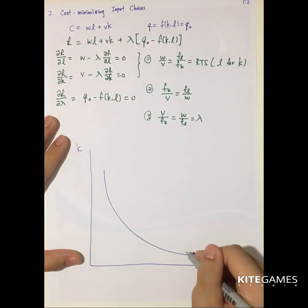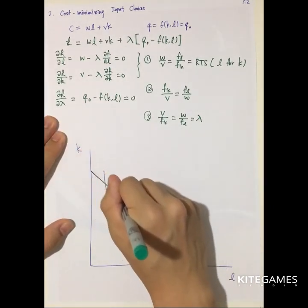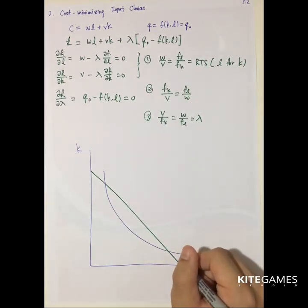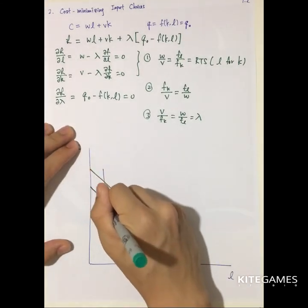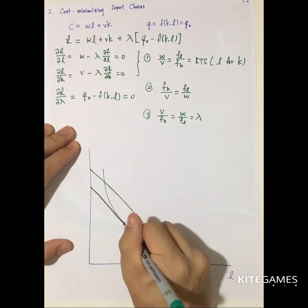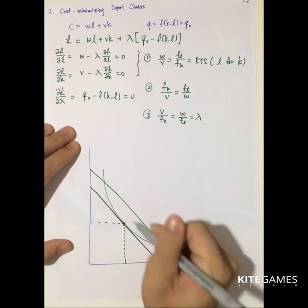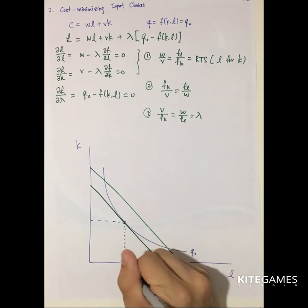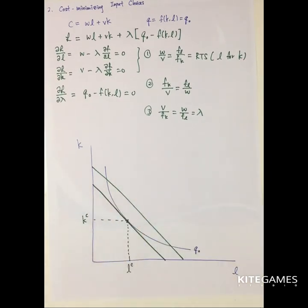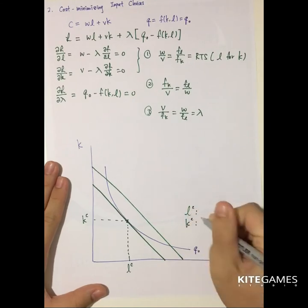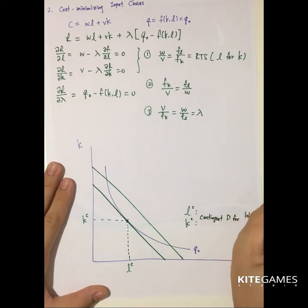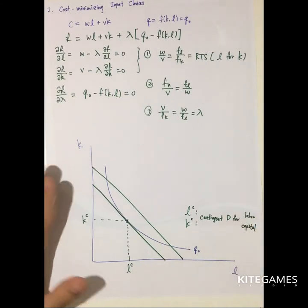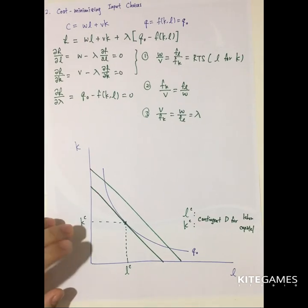Graphically, given the output and the isoquant, we select the appropriate cost function. We can adjust K and L to reduce cost until the cost function and the isoquant are tangent to each other. That tangency point gives the optimal L and K combination that minimizes cost. The values LC and KC at this point are called the contingent demand for labor and capital respectively — just the right amount of each input.